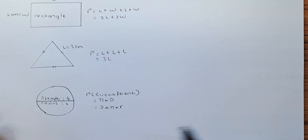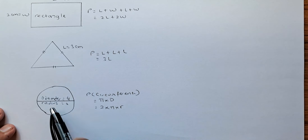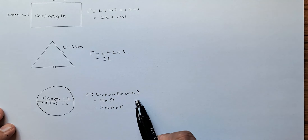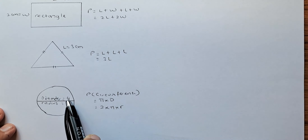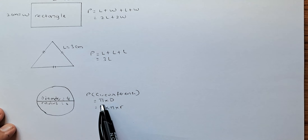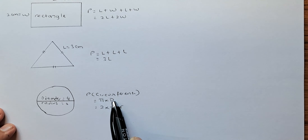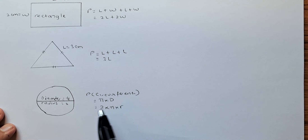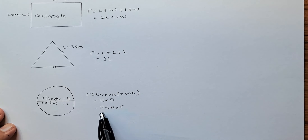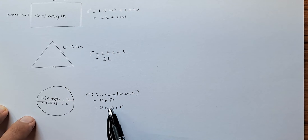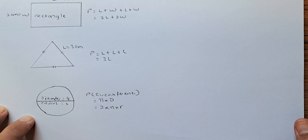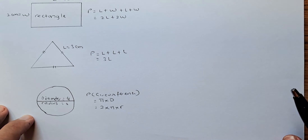Last but not least, we are going to find the perimeter of a circle, also called the circumference of the circle. The formula is pi times diameter, or two times pi times radius. Suppose the diameter is four — the circumference is pi times four, which equals four pi. Using the other formula, two pi r: the radius is half the diameter, so two times pi times two also gives four pi centimetres.